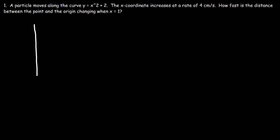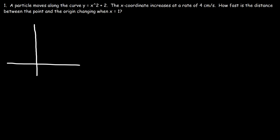Let's start with a picture and graph the function. x squared is basically a parabola, shifted up 2 units. Now let's say at this point x is equal to 1 — let's call that point P. Here is the origin. So we need to find out how fast the distance between the origin and point P is changing. We'll make a right triangle: this is going to be x, y, and the distance between point P and the origin — let's call it z.